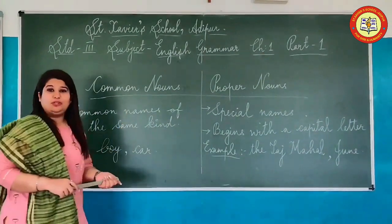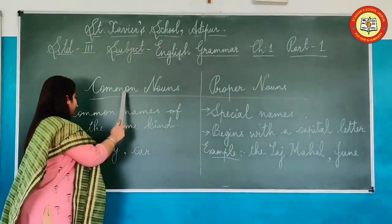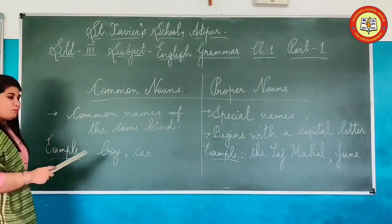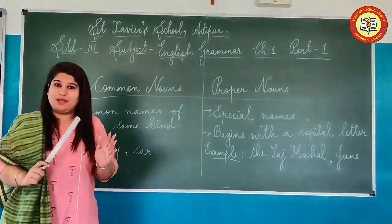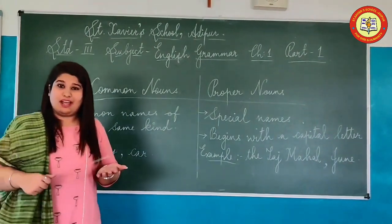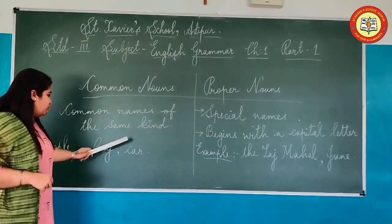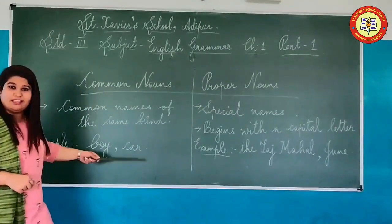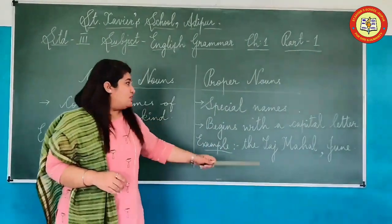The noun contains Common Noun and Proper Noun. First, Common Noun — it is a common name of the same kind. For example, see 'boy'. Boy refers to one group only, same kind. Boy consists of names, and names can be Ria, Raj — those names will come in proper noun. Similarly, the next example can be 'car'. The car also has proper names you can add, and those would be their special names.